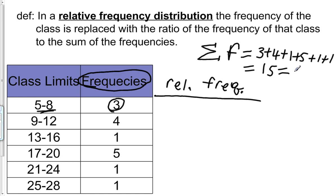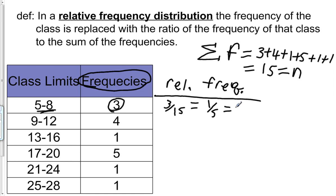The sum of the frequencies is also just the number of data values that were in the original raw data set — that's equal to n (or uppercase N if this were a population). So we're going to go through each class and divide the frequency for that class by the sum of the frequencies, which is 15. The first one is 3 divided by 15, which is one-fifth, or 0.2 as a decimal.